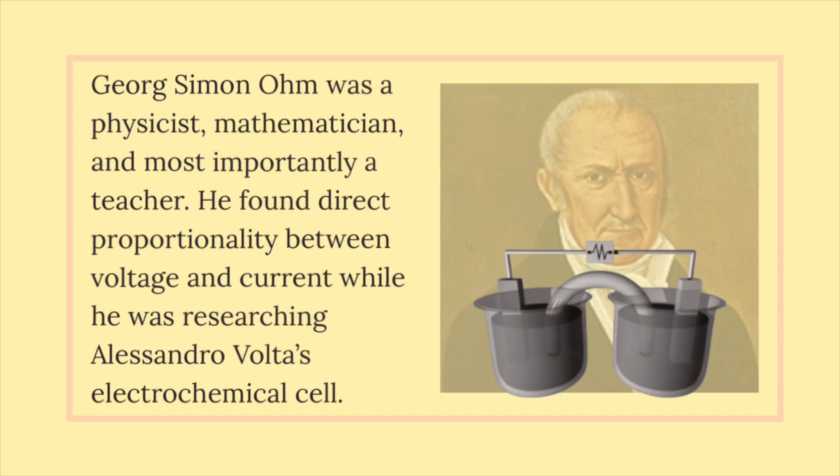Georg Simon Ohm was a physicist, mathematician, and most importantly a teacher. He found direct proportionality between voltage and current while he was researching Alessandro Volta's electrochemical cell.